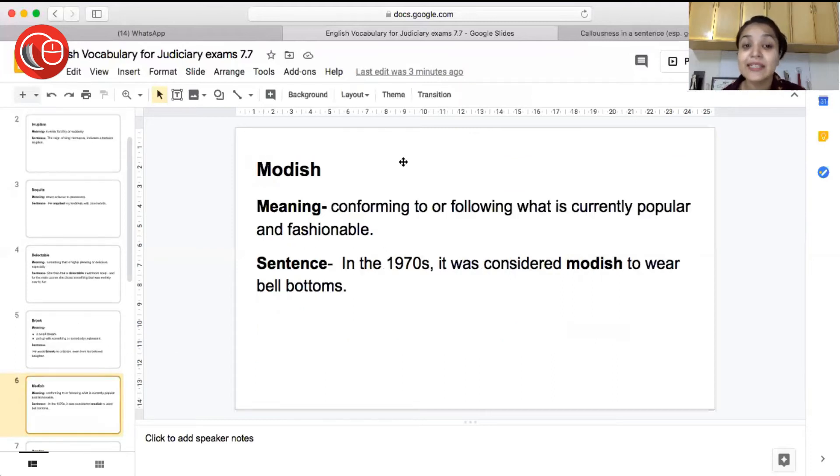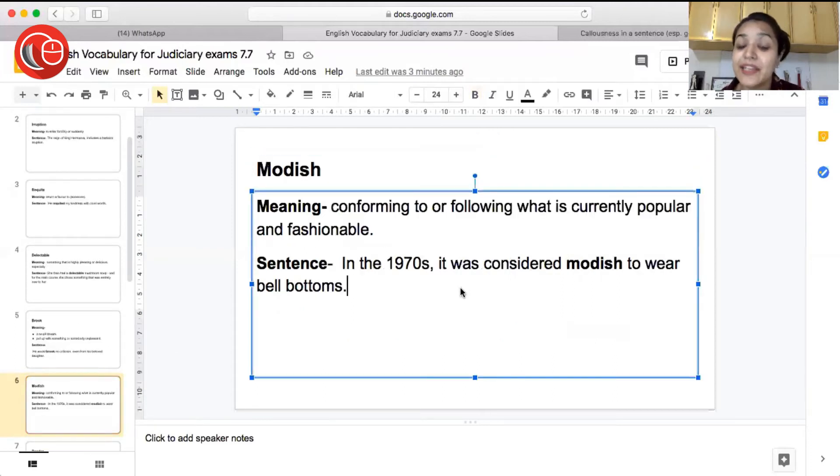The next word is modish, meaning conforming to or following what is currently popular and fashionable. So basically when you are accepting and following the current fashion, the fashion which is going on nowadays, that is called modish. When you are able to adapt the modern fashion, that is called modish. Sentence: In the 1970s it was considered modish to wear bell bottoms. So in 1970s wearing bell bottoms was considered to be the most fashionable outfit. So that is called modish.